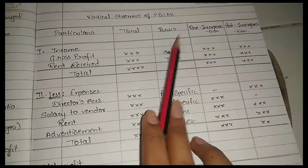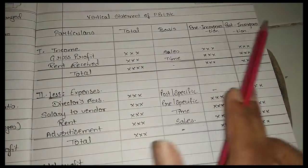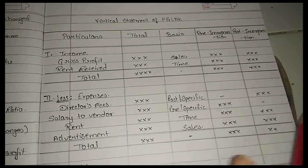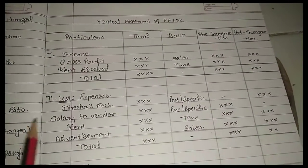Here we see vertical statement of profit and expenses. Four or five columns: particulars, total, basis, pre-incorporation and post-incorporation.